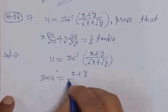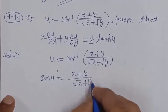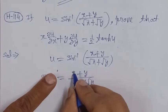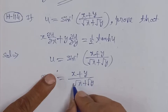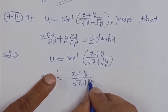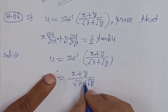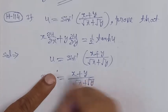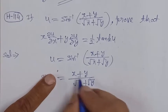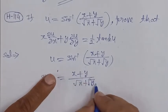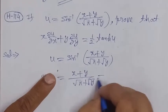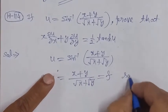Writing sin u equals (x plus y) upon square root x plus square root y. The numerator has power one and the denominator has power one by two. Each term in the numerator has power one and in the denominator has power one by two, making this a homogeneous function.